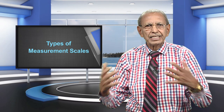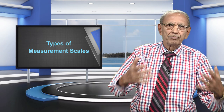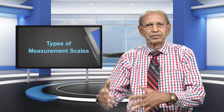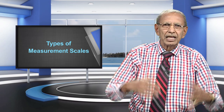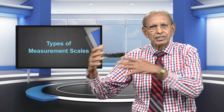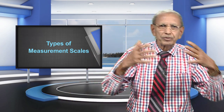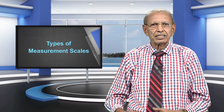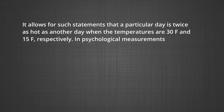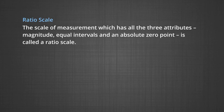The measurement of temperature in degrees Fahrenheit is another example of an interval scale. Although it allows for the comparison of intervals at different points of the scale, zero degrees Fahrenheit does not indicate an absolute absence of all heat. In psychological measurements, some assumptions are required. We have another type of scale, which is considered the highest scale of measurement — these are called ratio scales.